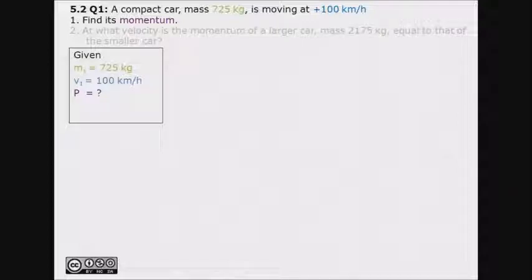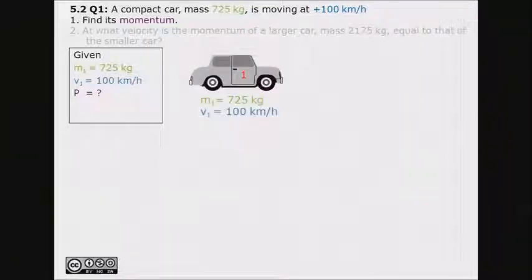First, we will be finding the momentum of the car. The information found in the question is color-coded and presented in the given information box. Here is the diagram representing the car.